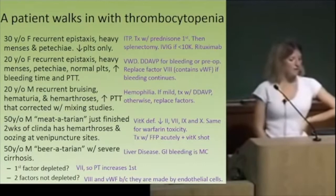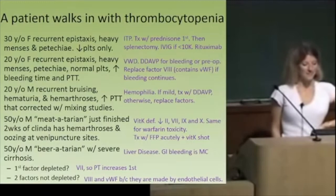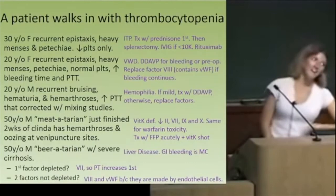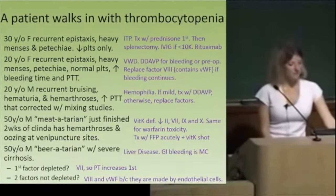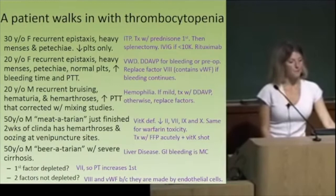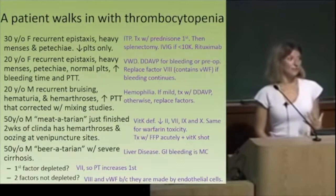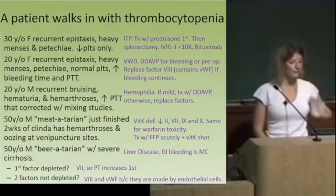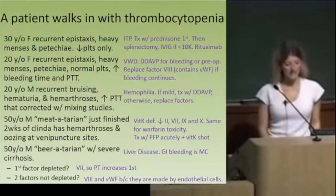A 50-year-old vegetarian who just finished two weeks of clindamycin has hemarthroses and oozing at venipuncture sites — vitamin K deficiency. He's a vegetarian so he doesn't eat vitamin K-rich foods, and clindamycin wiped out his gut flora. A 50-year-old with severe cirrhosis and thrombocytopenia: liver disease causes coagulopathy because the liver makes clotting factors. Factor VII is the first depleted, so in early liver failure the PT rises before the PTT. The two factors not depleted in liver failure are factor VIII and von Willebrand factor, because they're made by endothelial cells, not the liver.